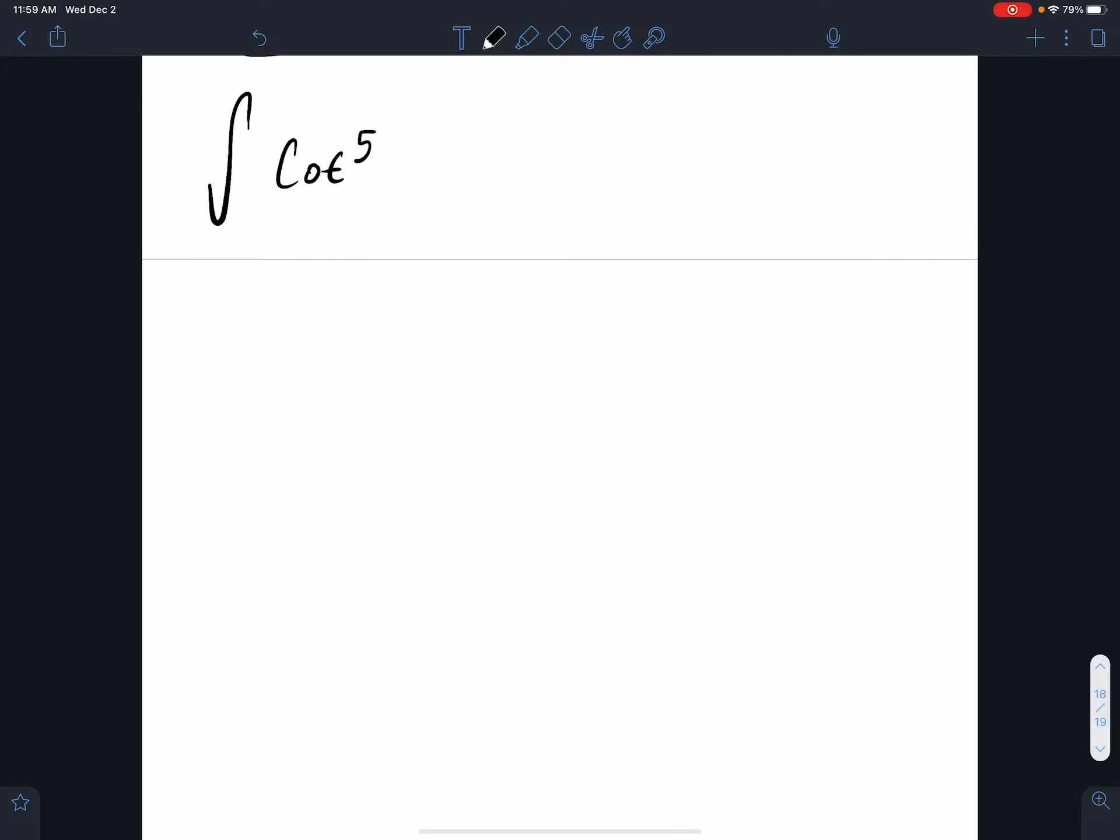So we're going to do cotangent to the fifth x cosecant to the fifth x dx. Now I see that I've got an odd power of cotangent, then I'm thinking I'll strip off a cosecant cotangent.